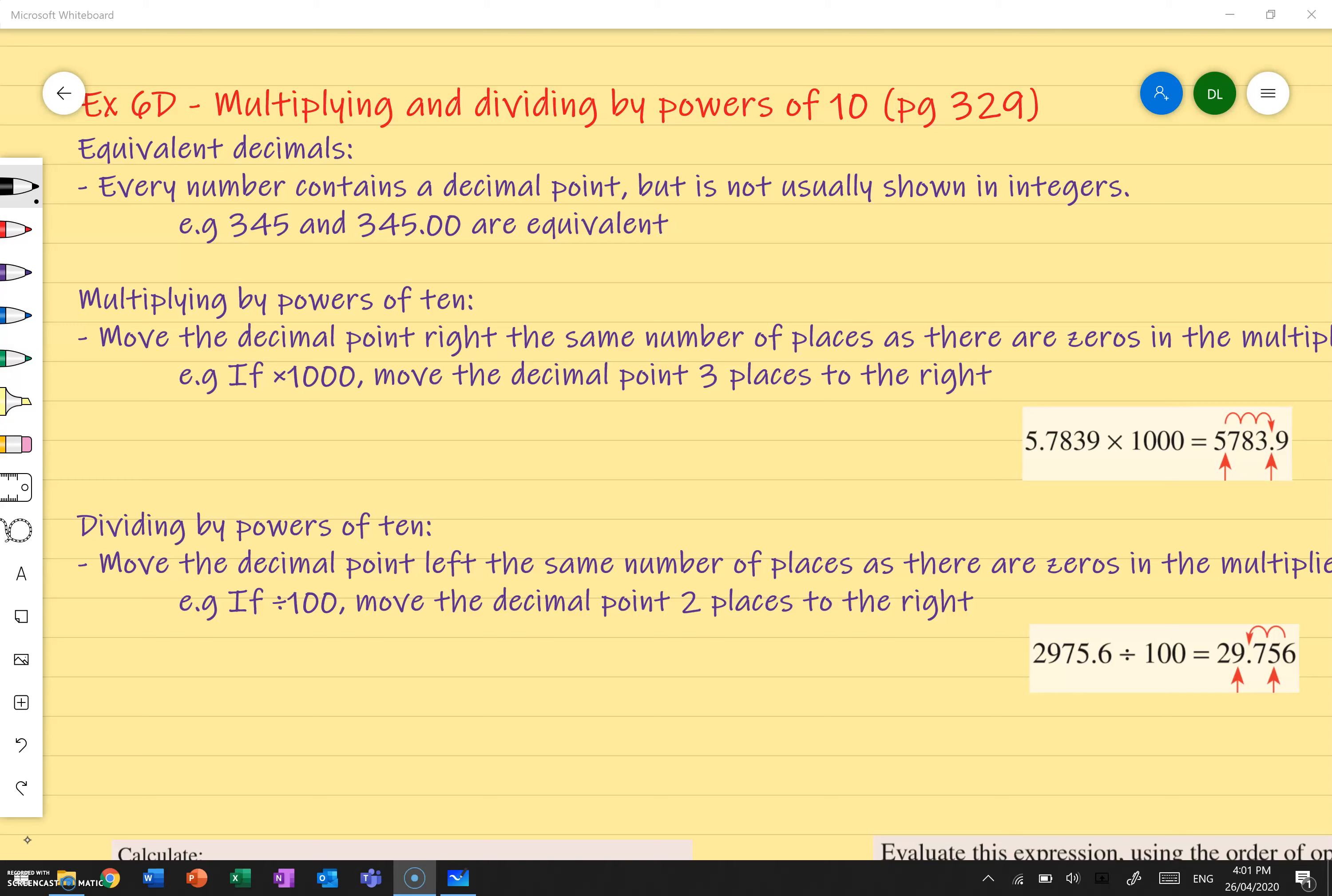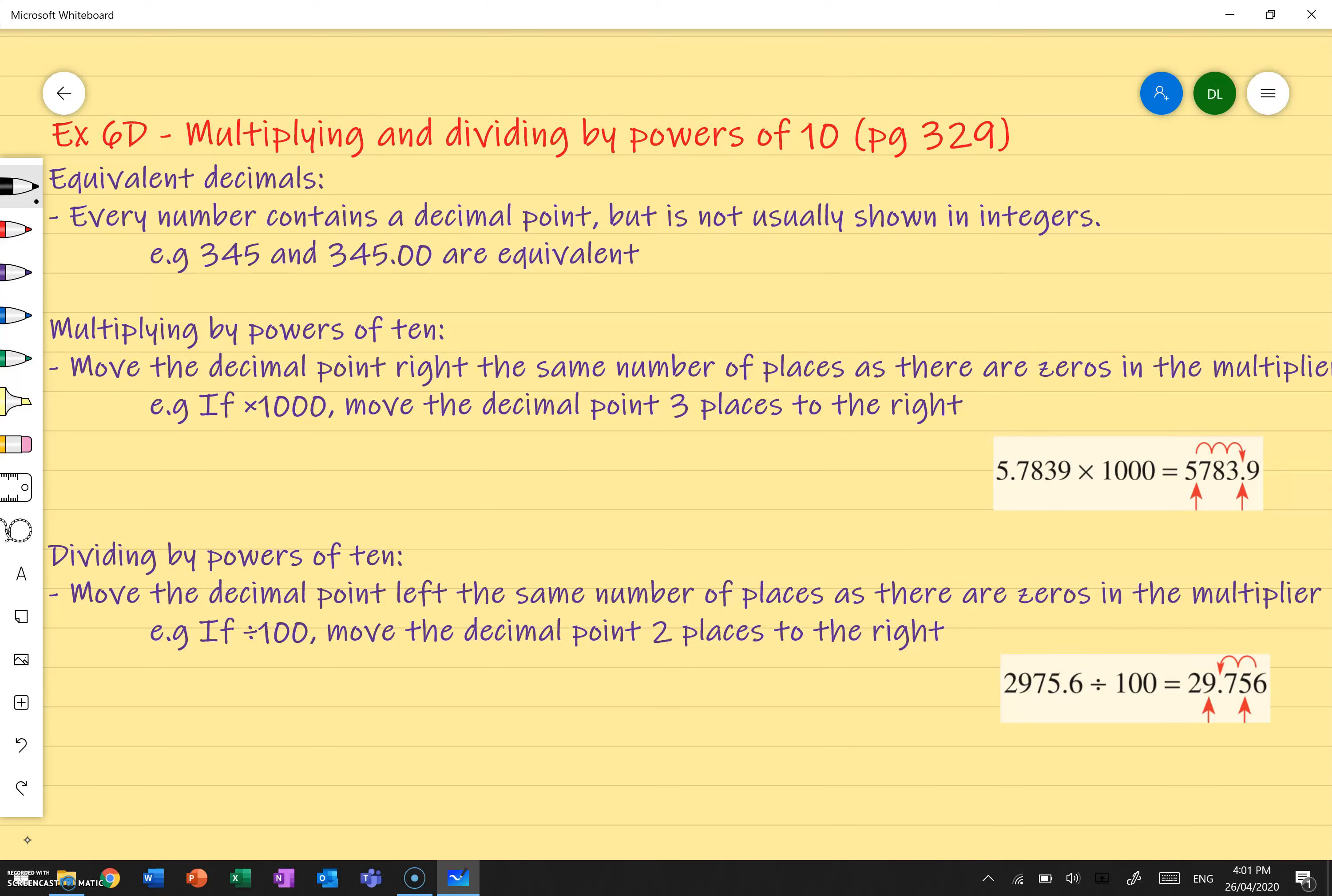Hey you sevens, this is exercise 6D which is on multiplying and dividing powers by powers of 10 and is on page 329 of your textbook. So we're actually multiplying by powers of 10. What does that mean? Well, powers of 10 basically means 10, 100, 1000, 10,000, you get the idea.